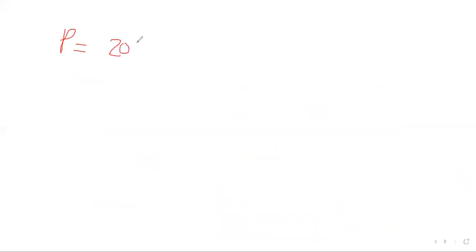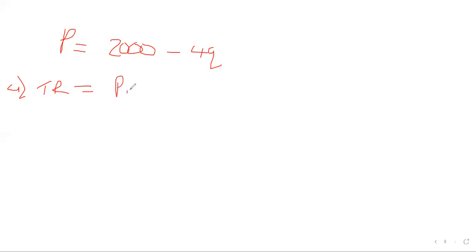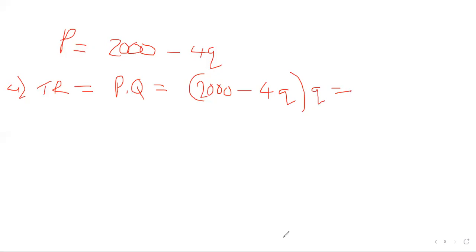Now try: price equals 2,000 minus 4Q. We start with total revenue — which is price times quantity. So total revenue is 2,000Q minus 4Q squared. Excellent. So we have found the total revenue. Next, who wants to find the average revenue?